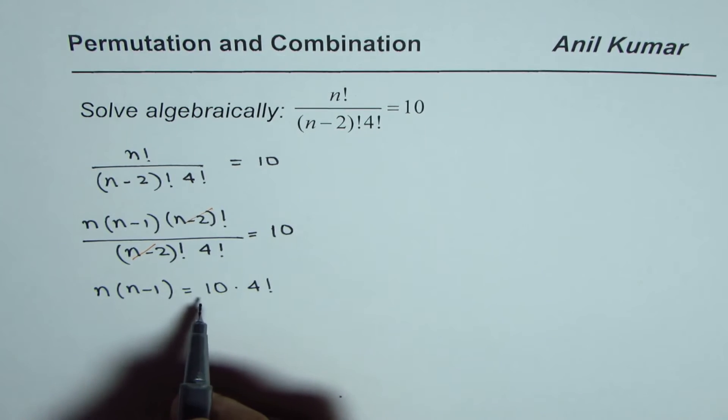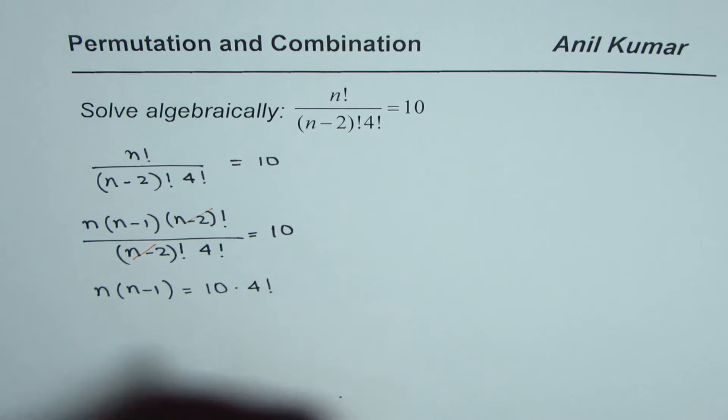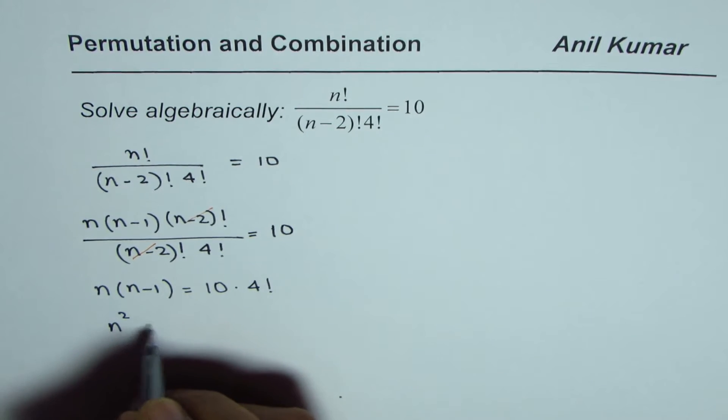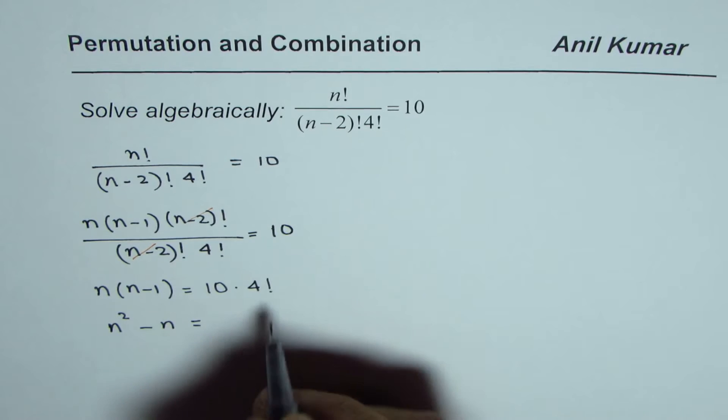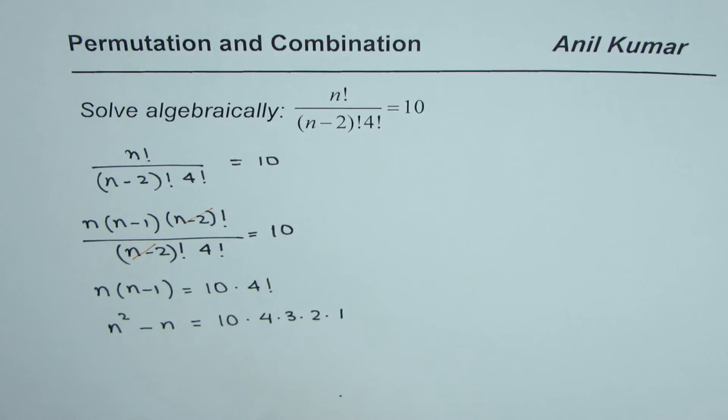That is kind of a quadratic equation. What we have here is n square minus n equals to 4 factorial. Let's write this as 4 times 3 times 2 times 1.